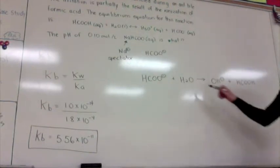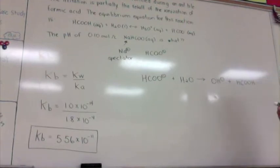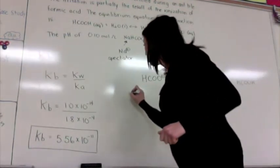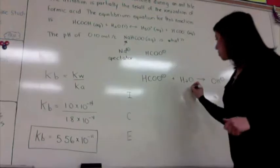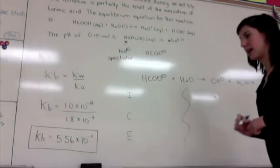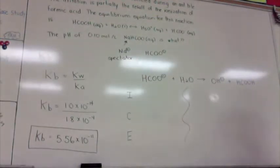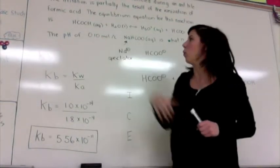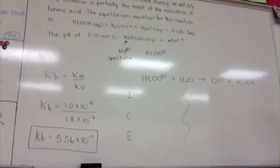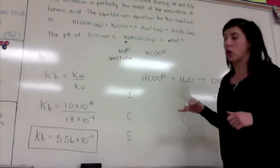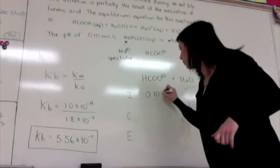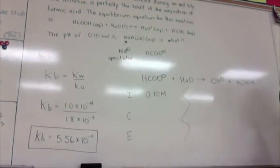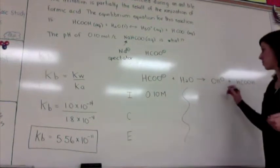As in regular ICE tables, because water is in liquid form, it is not included in the ICE table — you can cancel it out. From the question, our initial concentration is 0.10 mol/L of NaHCOO, which is the same as HCOO⁻ once we remove the spectator ion. So you can plug that in as your initial concentration. Because at the start there is no dissociation, the initial concentrations of the products are 0.